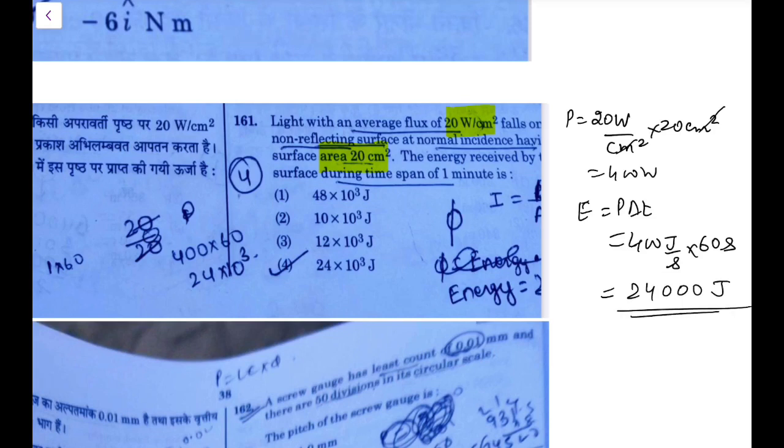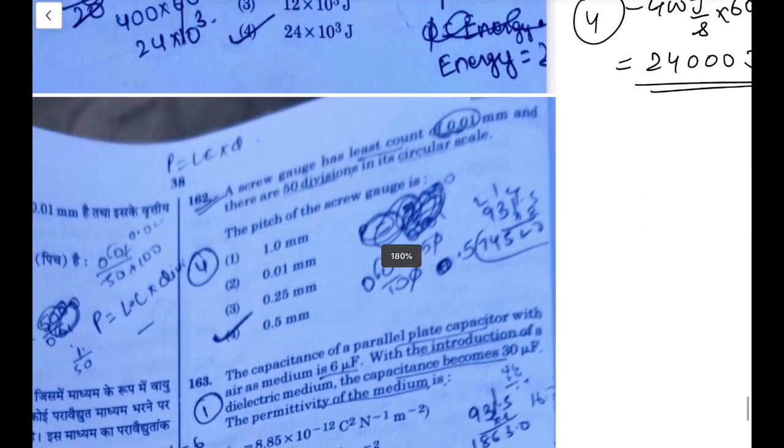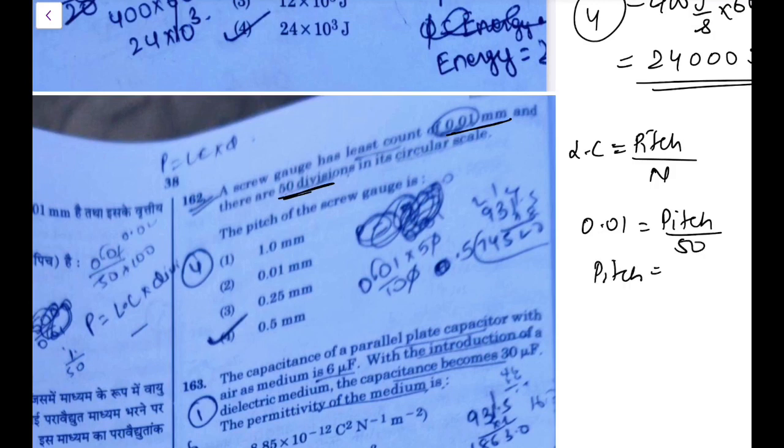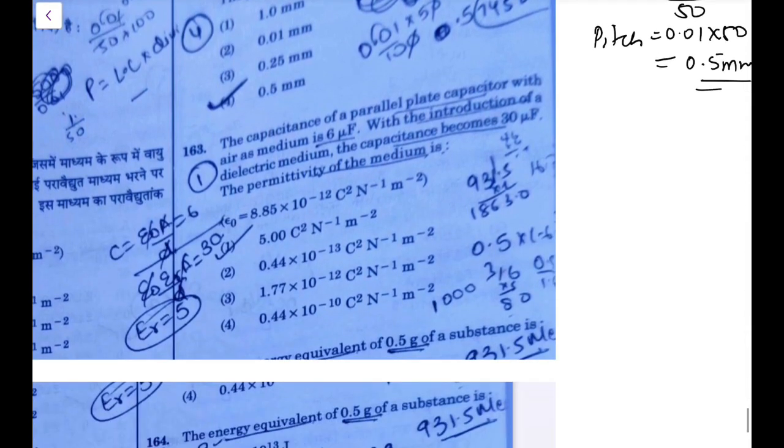So 24,000 joules, option 4 that is rightly marked. Next one: screw gauge is a least count of 0.01 mm and there are 50 divisions in the circular scale. We know least count is pitch upon divisions on a circular scale. This is 0.01, the number is 50. So the pitch is going to be 0.01 into 50. That is basically coming out as 0.5 mm. That is an easy one from the screw gauge, but the question has come.